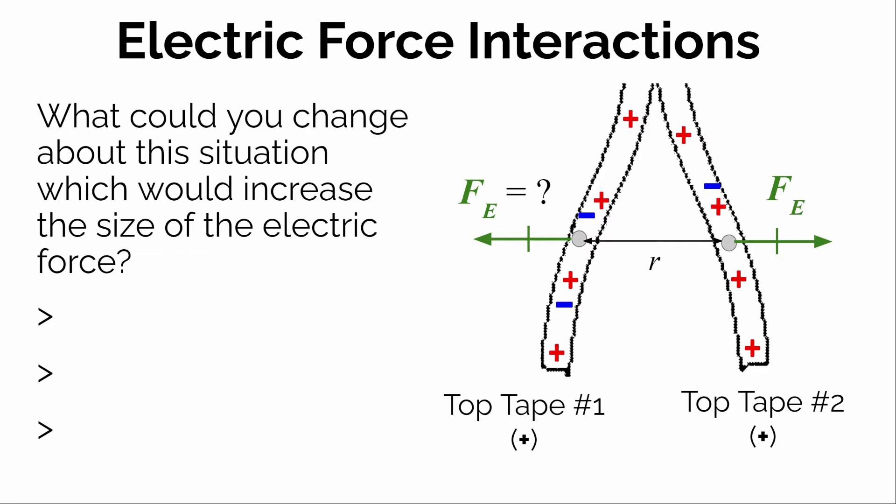Well, we know number one that distance matters. So if we bring the two objects closer to one another, we know that the electrostatic force would increase. Specifically, making the distance smaller — we would expect the electric force to be bigger.